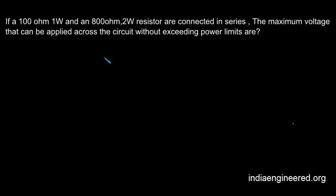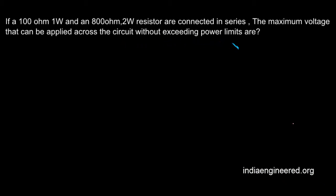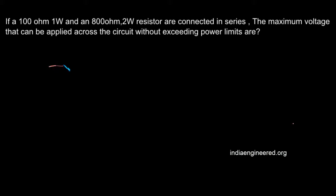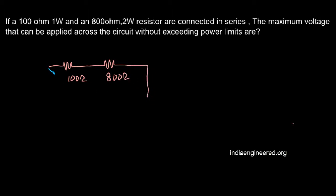It is given that a 100 ohm 1 watt and an 800 ohm 2 watt resistor are connected in series. We are asked to find the maximum voltage that can be applied across the circuit without exceeding power limits. We will draw the circuit diagram: a 100 ohm resistor in series with an 800 ohm resistor, and we need to find the maximum voltage V across these two terminals.